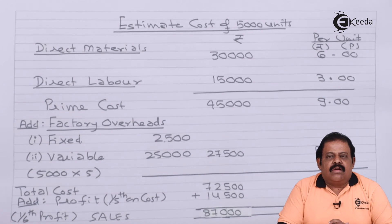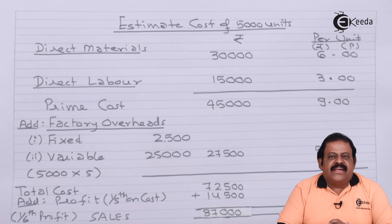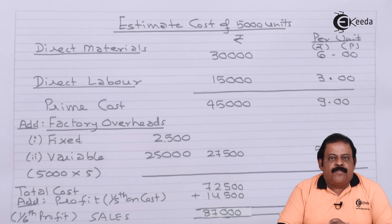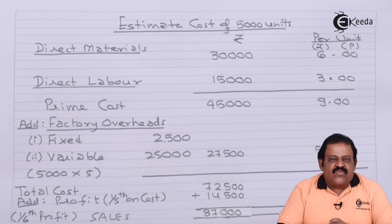In this question we learned that when total overheads are given without bifurcation of variable and fixed cost, we can calculate it based on the output given for different periods. We look at the difference in output and difference in total cost to find out the bifurcation of variable and fixed cost.